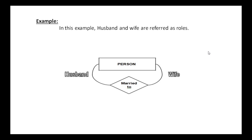For a second example, consider the person entity. There are several person entity occurrences existing in the person entity — husband and wife occurrences are both there. A husband is married to a wife. In this recursive relationship, a one-to-one relationship exists between the person entity and itself: one male person is married to one female person. Both are entity occurrences existing in the person entity itself. Here, husband and wife are referred to as roles.